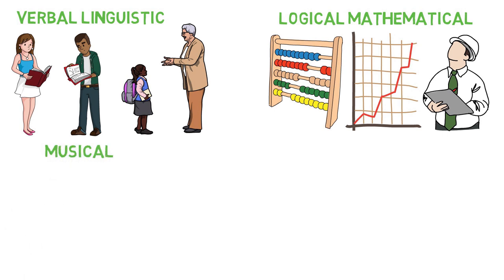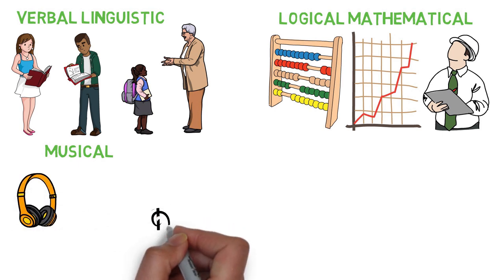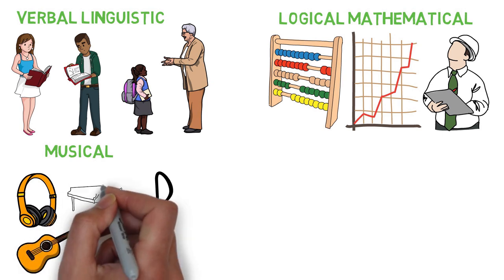People with musical intelligence are very sensitive to music and are able to interpret pitch, rhythm, timbre and tone. They are good at performing, composing and appreciating music and musical patterns. Musicians, singers, composers, music teachers and DJs have a high level of musical intelligence.